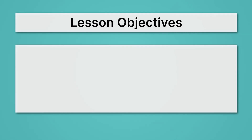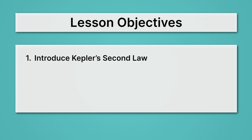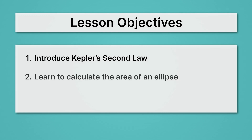Let's begin by reviewing our lesson objectives. First, we'll introduce Kepler's second law — it can be a little challenging, so we'll state it simply at first, then add details to make it totally accurate. Second, we'll learn to calculate the area of an ellipse, which is really important for applying Kepler's second law. And lastly, we'll apply Kepler's second law using what we've learned.